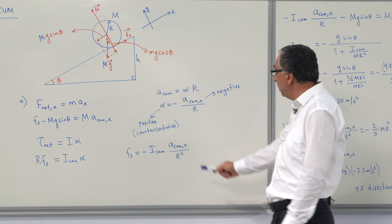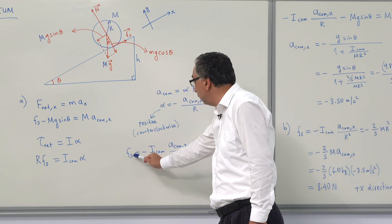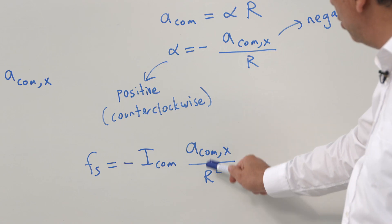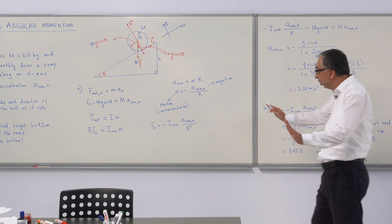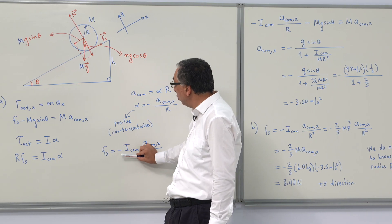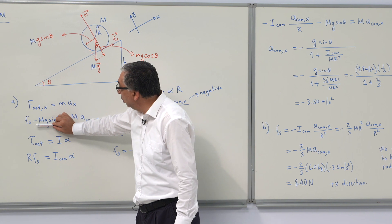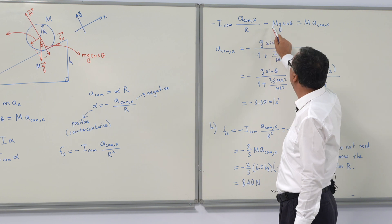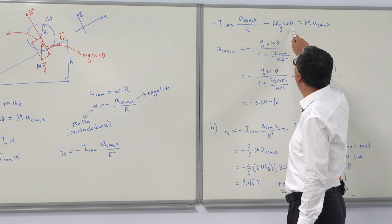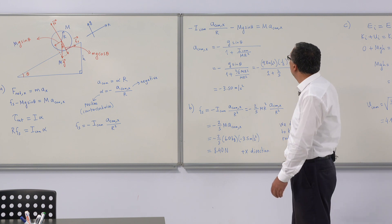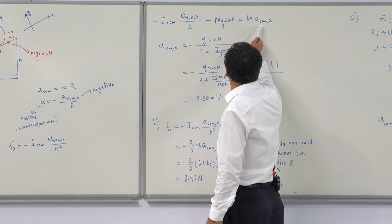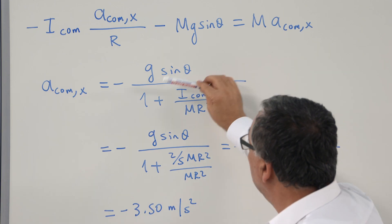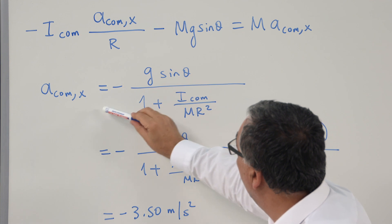From the torque equation, the frictional force equals minus rotational inertia times a over r squared. Substituting this into Newton's second law — frictional force minus mg sin θ equals ma — we can rearrange to obtain an expression for acceleration.